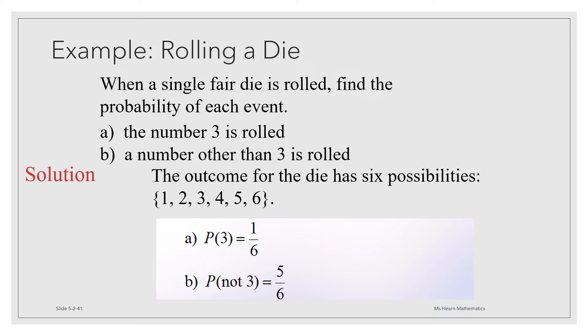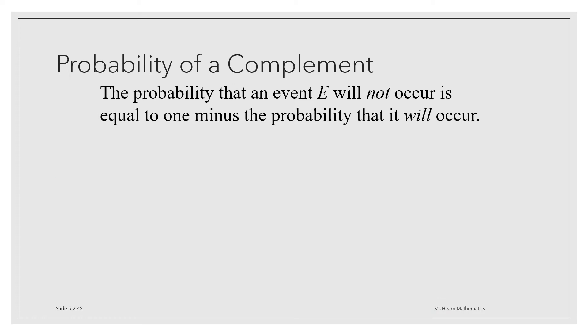To understand the relationship, we must understand the probability of a complement. The probability that an event E will not occur is the complement of E. The probability that an event E will not occur is equal to 1 minus the probability that it will occur. Symbolically, this can be written as P(E') = 1 - P(E).